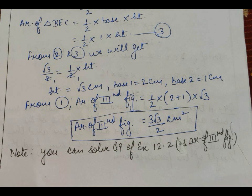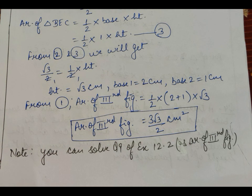Note: I used the equilateral triangle formula here because the triangle was equilateral. If the triangle is not equilateral, you can instead use Heron's formula. In this case we found the area of triangle BEC by two methods: equilateral triangle formula first, then half × base × height. You can also use Heron's formula with half × base × height depending on the situation.